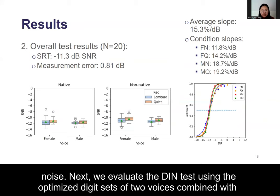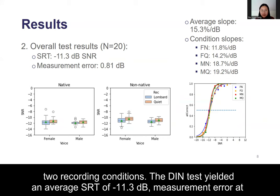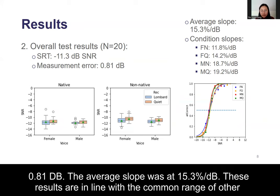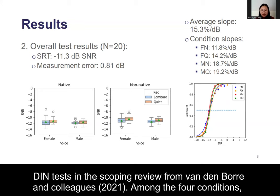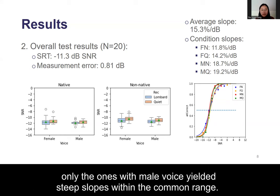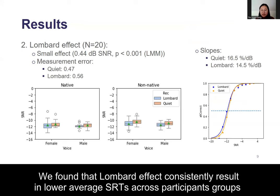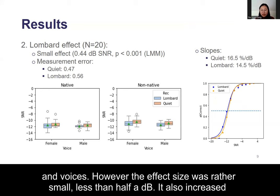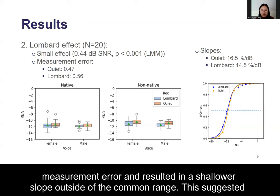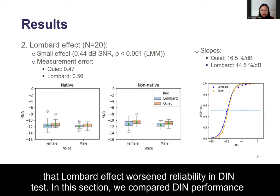Next, we evaluate the DIN tests using the optimized digit sets of two voices combined with two recording conditions. The DIN tests yield an average SRT of minus 11.3 dB, a measurement error of 0.81 dB, and an average slope of 15.3% per dB. These results are in line with the common range of other DIN tests from the scoping review by Van de Boer and colleagues. Among the four conditions, only those with male voice yield a steeper slope within the common range. We found that Lombard effect consistently results in lower average SRTs across participant groups and voices; however, the effect size was rather small — less than half a dB. It also increased measurement error and resulted in a shallower slope outside of the common range, suggesting that Lombard effect worsened reliability in DIN tests.